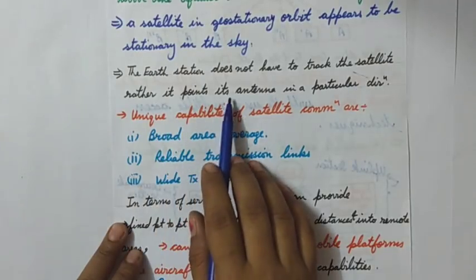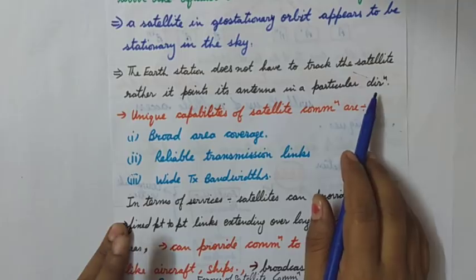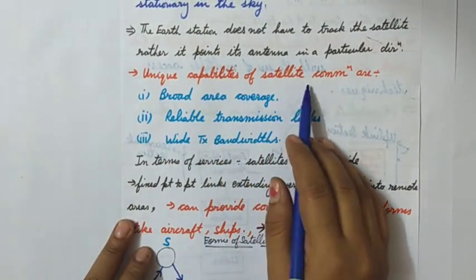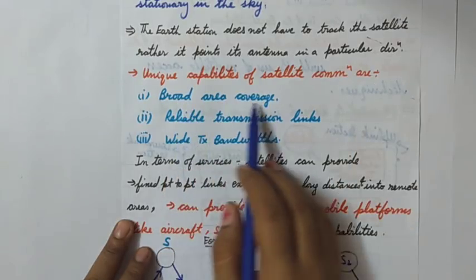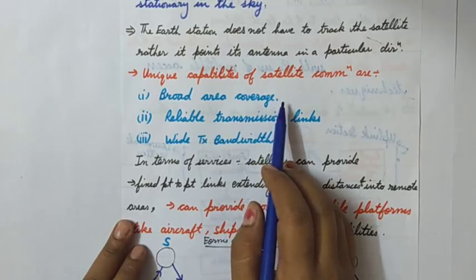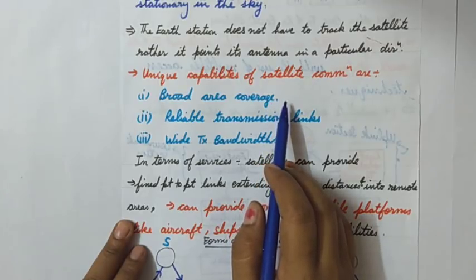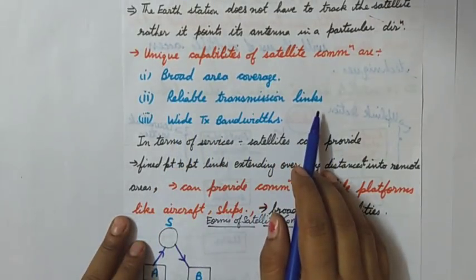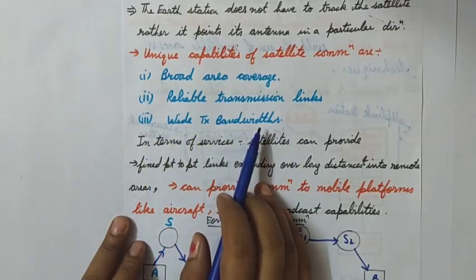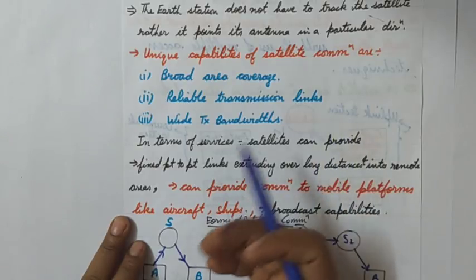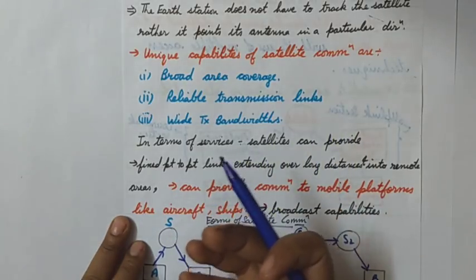The earth station need not track the satellite since the satellite is in a stationary position in the sky — it just has to point its antenna in a particular direction towards the satellite. The unique capabilities of satellite communication are: they provide broad area coverage — intercontinental communication is an example, and only three satellites are required to cover the entire earth. They also provide reliable transmission links.